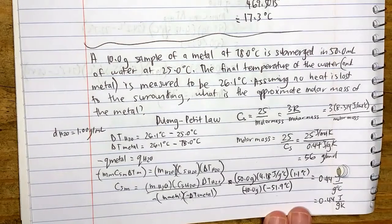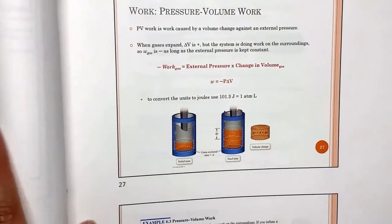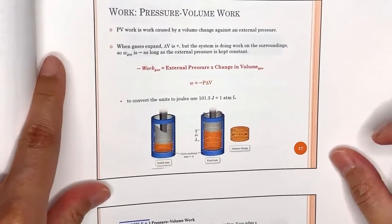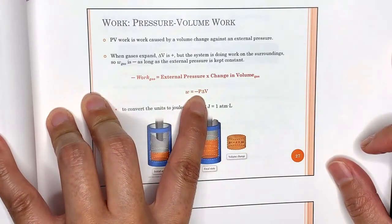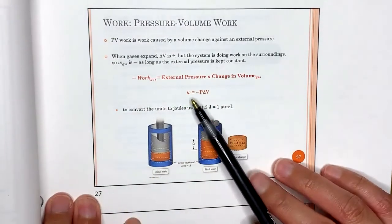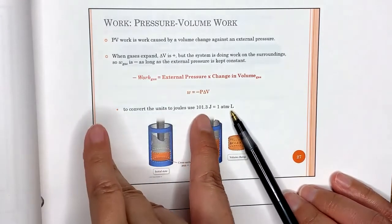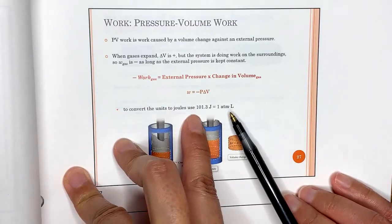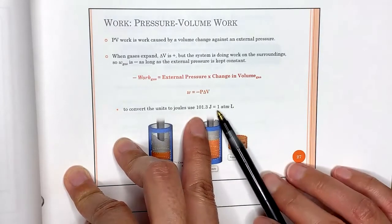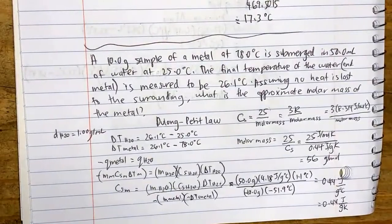Now let's talk about pressure-volume work. The formula is w = −P_external·ΔV, where pressure is in ATM and volume is in liters. The conversion is 1 ATM·L = 101.3 joules. Example: inflating a balloon from 0.100 L to 1.85 L against 1.00 ATM external pressure. w = −1.00 ATM × (1.85 − 0.10) L = −1.75 ATM·L = −177 joules. Negative means the system does work on the surroundings.